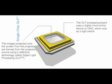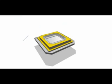The DLP processing board uses a digital micromirror device, or DMD, which acts as a light switch.